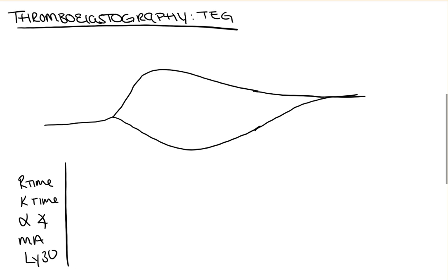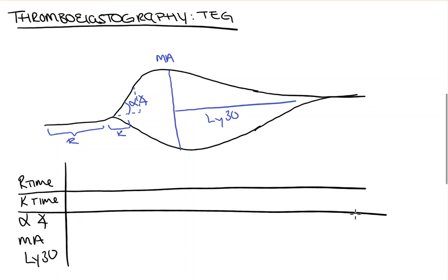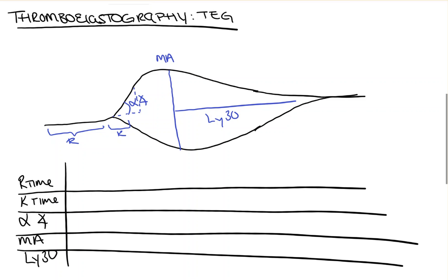And I'm going to go ahead and label them here. R time, K time, alpha angle. And now we're just going to discuss a couple of the parameters for each one of these. What normal is, what they mean, how to treat them.